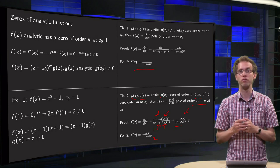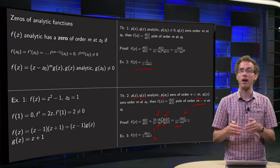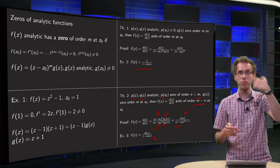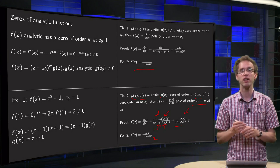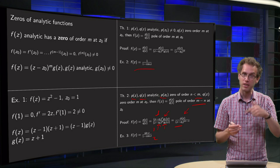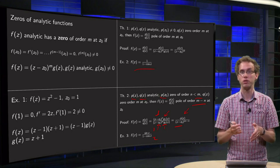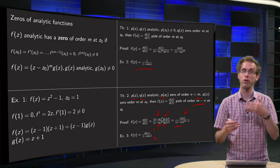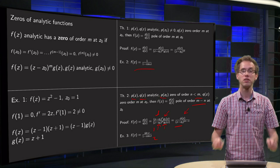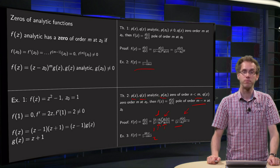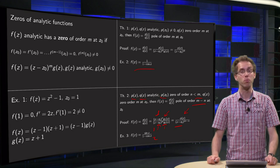So this is how you can always figure out the order of a pole: look at the order of the zero of the numerator and the order of the zero of the denominator. If the order of the zero of the numerator is bigger than that of the denominator, you have a removable singularity. If the order of the zero of the denominator is higher than that of the numerator, the order of your pole is M minus N — the order of the denominator's zero minus the order of the numerator's zero.